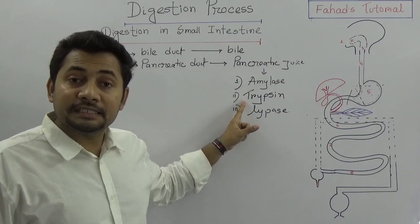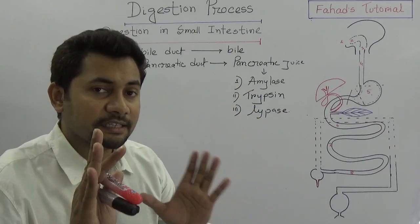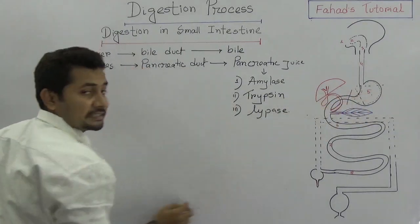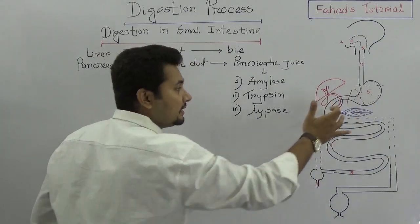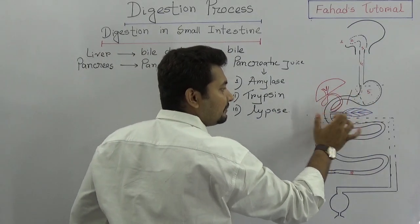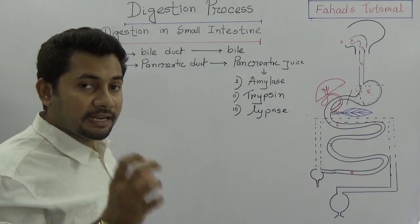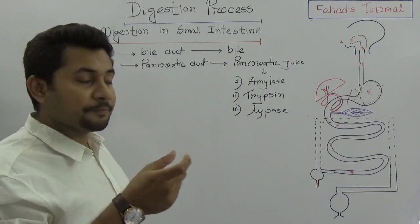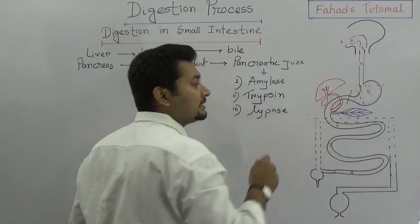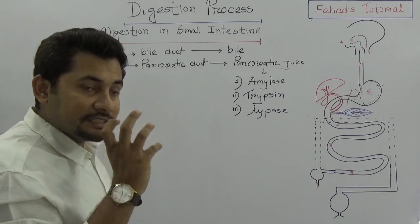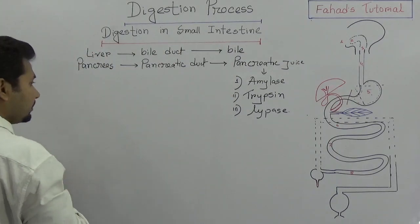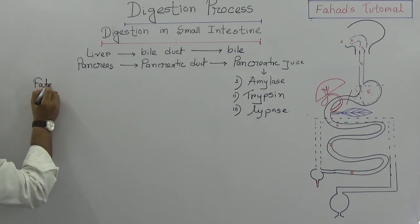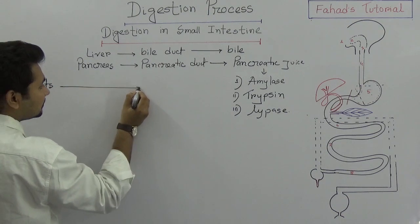So we have an amylolytic enzyme, a proteolytic enzyme, and a lipolytic enzyme. Now think about the series of reactions going on. The chyme is extremely acidic, so the pancreatic juice and the bile salts will neutralize the acidic reaction in the duodenum.